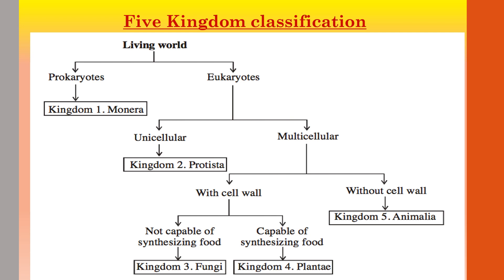Organisms which have a cell wall are divided into two groups: those which are not able to synthesize their own food — we have the kingdom Fungi; and those which are capable of preparing their own food — we have the kingdom Plantae. In multicellular organisms without a cell wall, we have the kingdom Animalia.